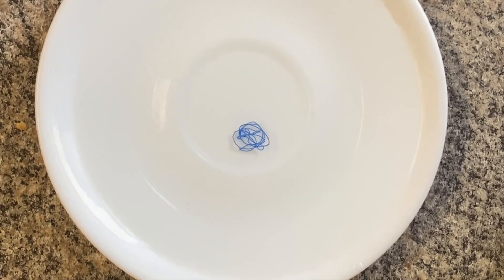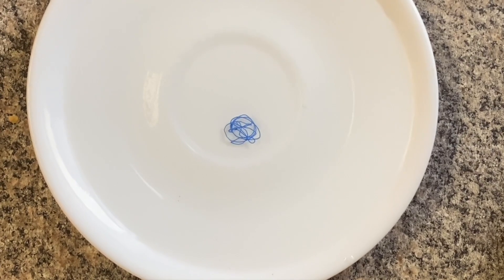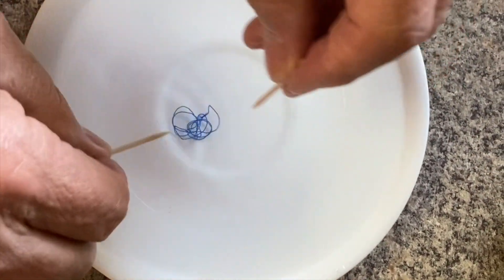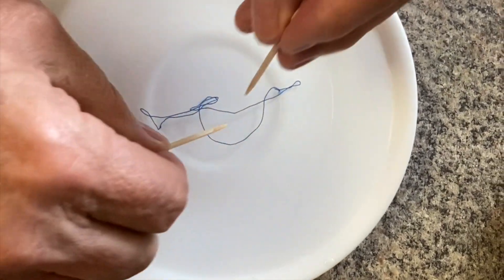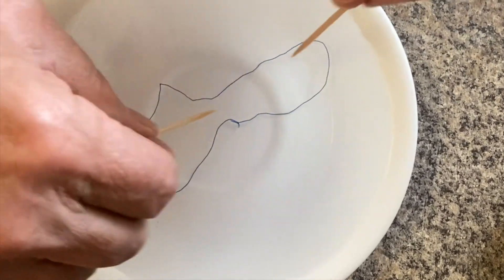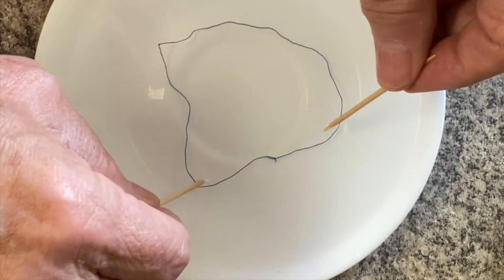Okay folks, I've got my little saucer right here and I've got a piece of thread. I'm going to tease this thread apart with these toothpicks and spread it out. As you can see it's actually a circle, but I got it separated.